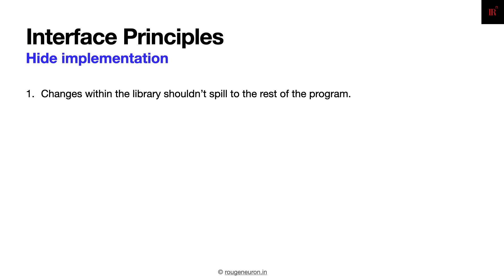Let's look at certain finer nuances of the interfacing design principles. The first one is that changes within the library shouldn't spill to the rest of the program. Interface robustness and consistency comes from the fact that the implementation behind the interface changing doesn't affect the user directly. The newer version of the library should continue to work as is in the user code — the user shouldn't be aware that certain implementation changes were made.